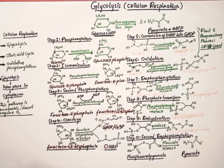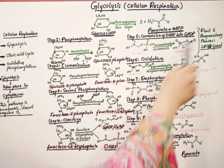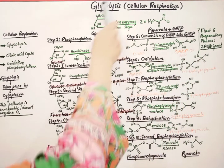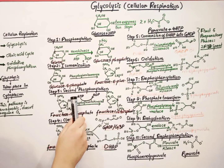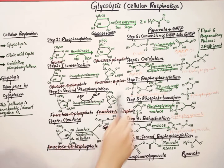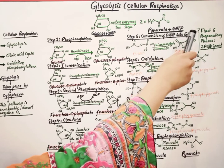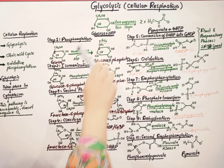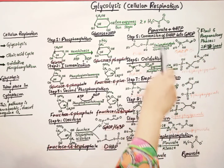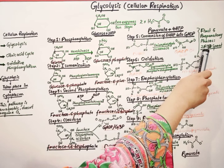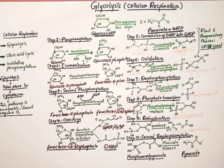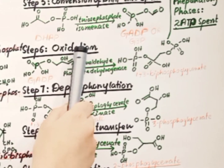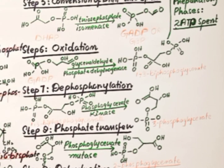These are the first five preparatory phases of glycolysis: phosphorylation, isomerization, second phosphorylation, cleavage, and the conversion of DHAP into G3P. In these five steps we spend two ATP molecules. The preparatory phase ends at step 5, and now the payoff phase will start from oxidation, with five more steps remaining.